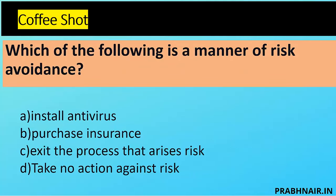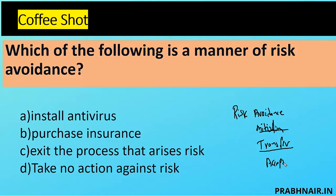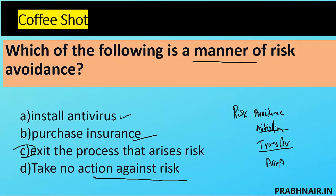Question eleven: which of the following is an example of risk avoidance? There are four risk response types: avoidance (stop the activity bringing risk), mitigation (implement controls), transfer (shift impact to a third party), and acceptance (cost of control exceeds risk or risk is below appetite). Installing antivirus is mitigation. Purchasing insurance is transfer. Exiting the process that causes risk is avoidance. Taking no action is acceptance. The answer is C — exit the process that causes the risk.